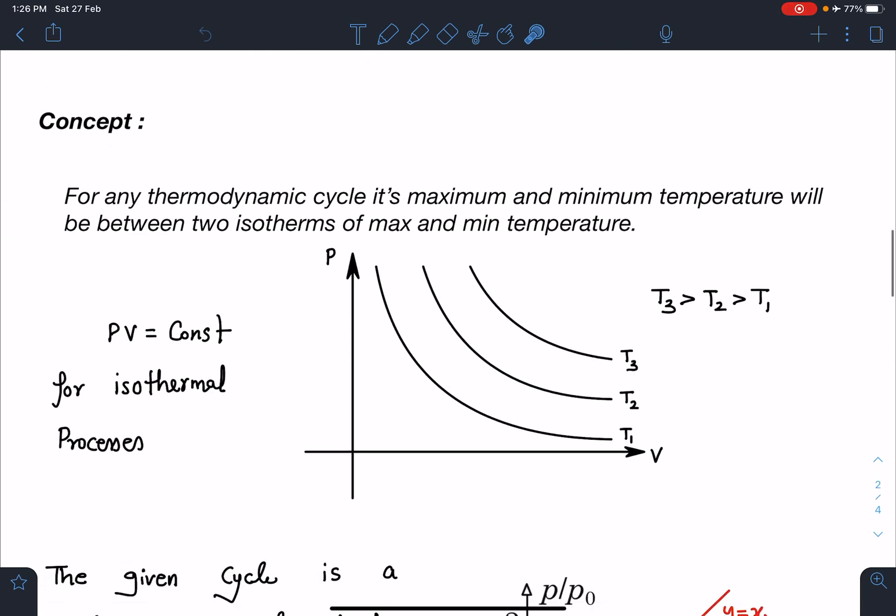Concept-wise, for any thermodynamic cycle, its maximum and minimum temperature will be between two isotherms of max and minimum temperature. We know the isothermal process is PV=constant, which is a rectangular hyperbola. If we have a set of rectangular hyperbolas, there will be parallel curves, and the graph which is above all that will be at maximum temperature.